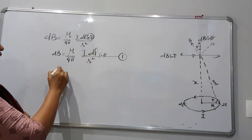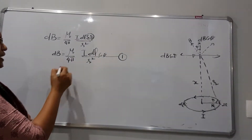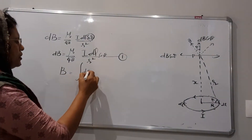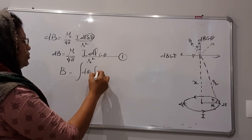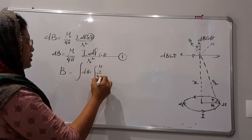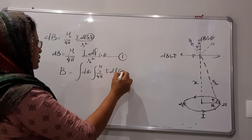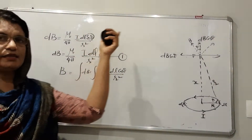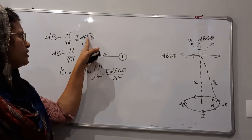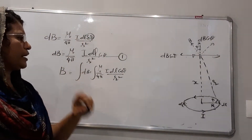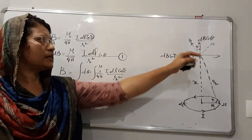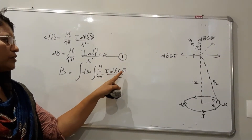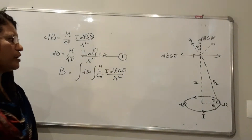The total magnetic field density due to the entire loop is B = ∫dB = ∫(μ₀/4π · I·DL·cosθ / r²). This is the vertical component that we integrate. Now we need to substitute expressions for cosθ and r².